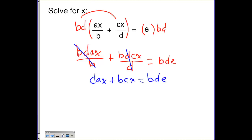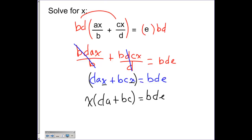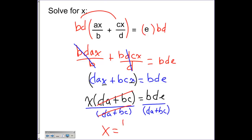All I did was multiply by the least common denominator, which is bd. Now I've gotten rid of my fractions, and I can see that dax and bcx both have an x in common, which means I can factor an x out. Factoring gives x times (da plus bc) equals bde. The x is multiplying that expression, so I divide both sides by da plus bc. The da plus bc cancels on the left, leaving x equals bde over da plus bc. That's the final answer.